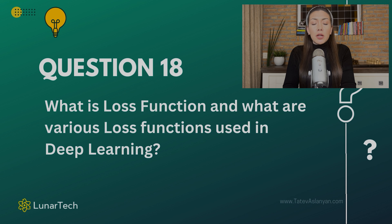The next question is: what is a loss function, and what are various loss functions used in deep learning? A loss function is used to quantify the amount of overall error that the model is making. We need a way to measure the amount of error the model is making, and we use the idea of loss functions to do so — measuring the overall errors when performing predictions.